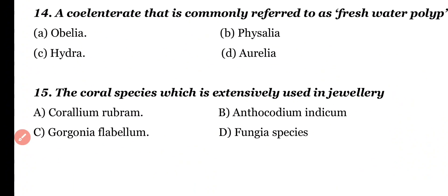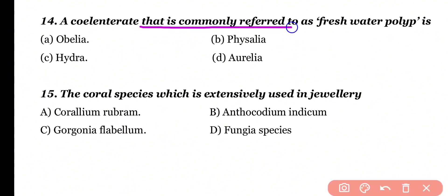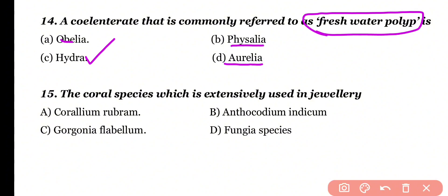Question number 14: A coelenterate that is commonly referred to as a freshwater coelenterate: Obelia, Physalia, Hydra, or Aurelia. Correct answer is option C. Hydra is a freshwater coelenterate, whereas Obelia, Physalia, and Aurelia are marine water coelenterates.